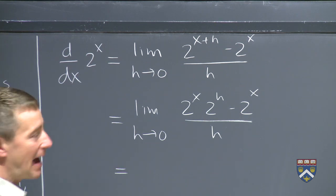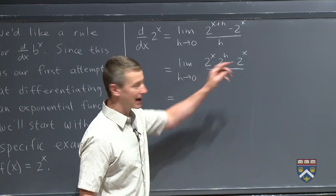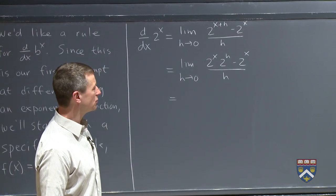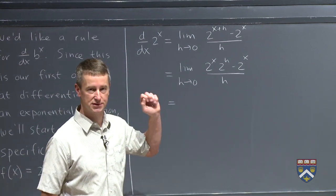And in fact, how far can we factor this out? As h is going to 0, is 2 to the x changing at all? And the answer is no. 2 to the x is not changing at all. So 2 to the x is a constant from the point of view of this limit as h goes to 0.